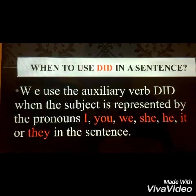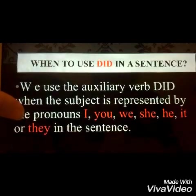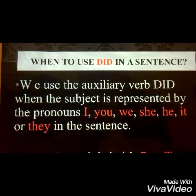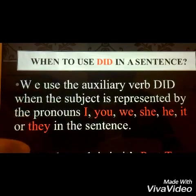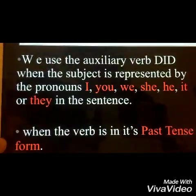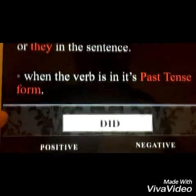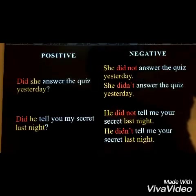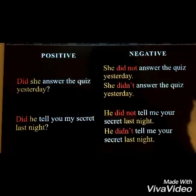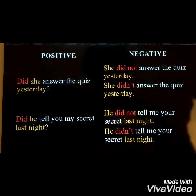Next, when to use did in a sentence. We use the auxiliary verb did when the subject is represented by the pronouns I, you, we, she, he, it, or they in the sentence, or when the verb is in its past tense form. Our first sentence is 'Did she answer the quiz yesterday?' For the negative form, you can say 'She did not answer the quiz yesterday.' We use did not because of the pronoun she and because the action happened yesterday. Or you could say 'She didn't answer the quiz yesterday.'